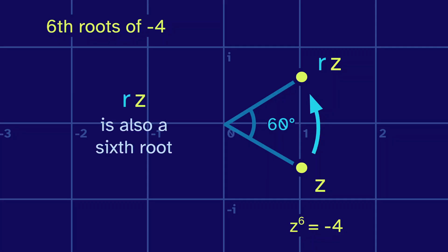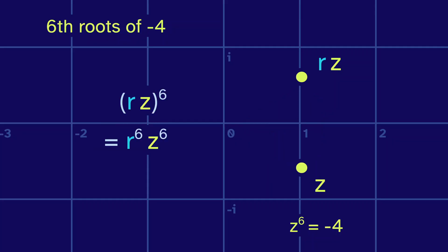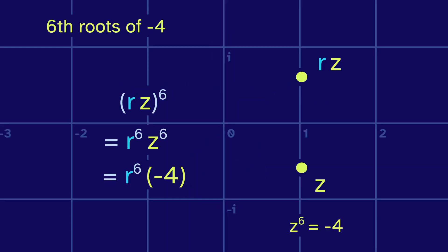Rz is also a sixth root. If we raise it to the sixth power, then distribute the exponent, we know that z to the sixth is negative four. What about r to the sixth? Well, that just means rotate by 60 degrees six times, which ends up being 360 degrees. This takes us right back to where we started. So this r to the sixth cancels out, and we're left with just negative four. So yes, rz is the sixth root of negative four.